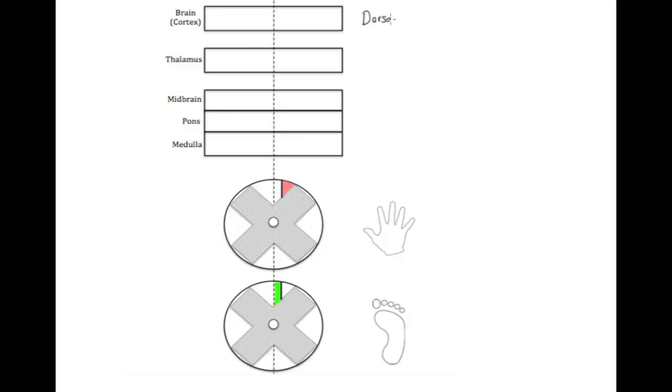Hey guys, today we're going to talk about dorsal column medial lemniscus pathway. This is a sensory pathway that takes sensory information from the body to the cerebral cortex to be analyzed. Once the information is analyzed, the cerebral cortex will send back response through another pathway called the corticospinal tract.